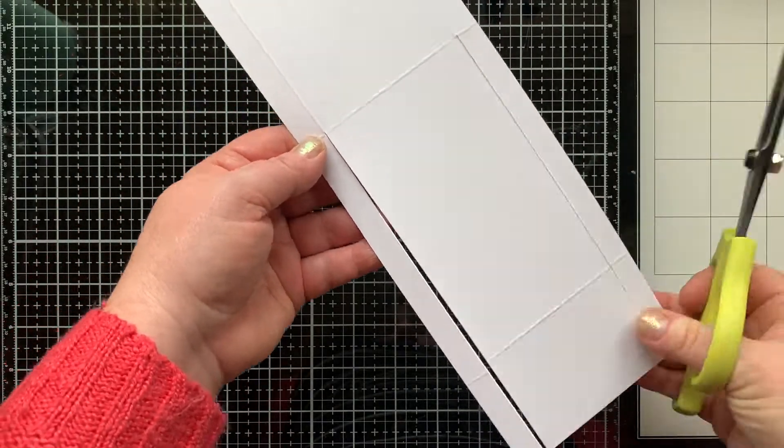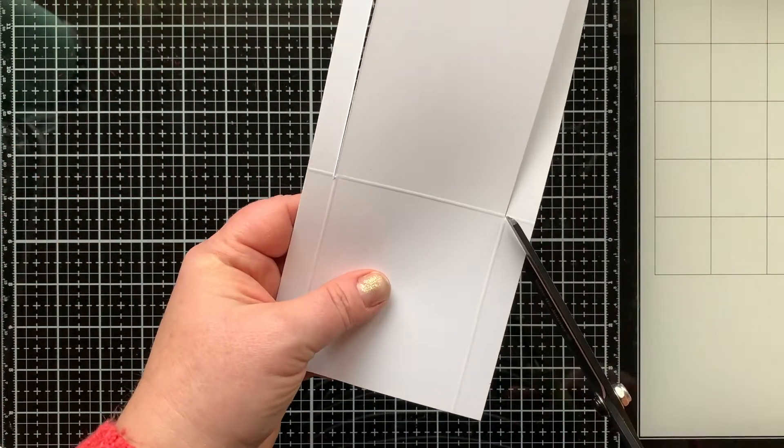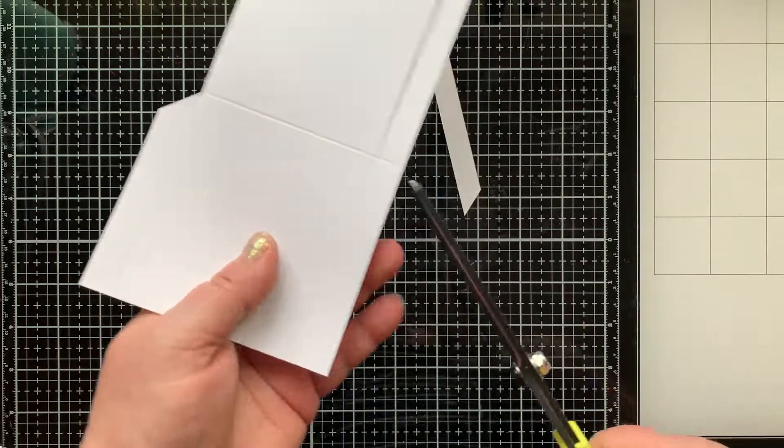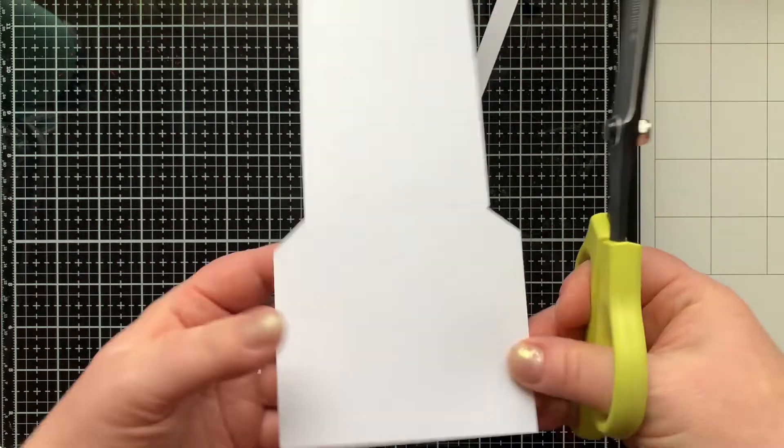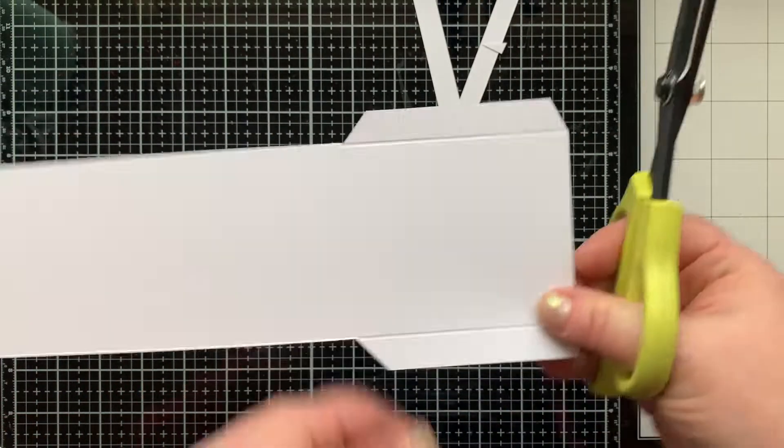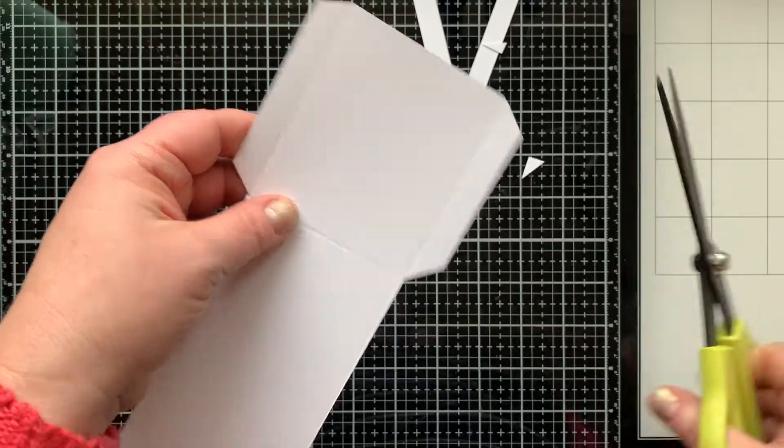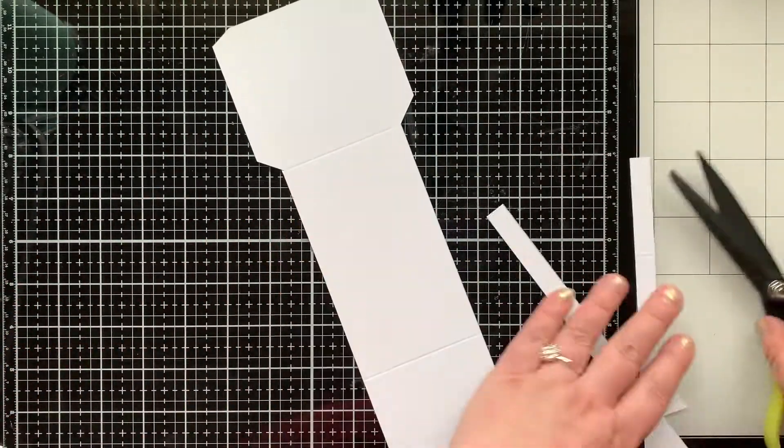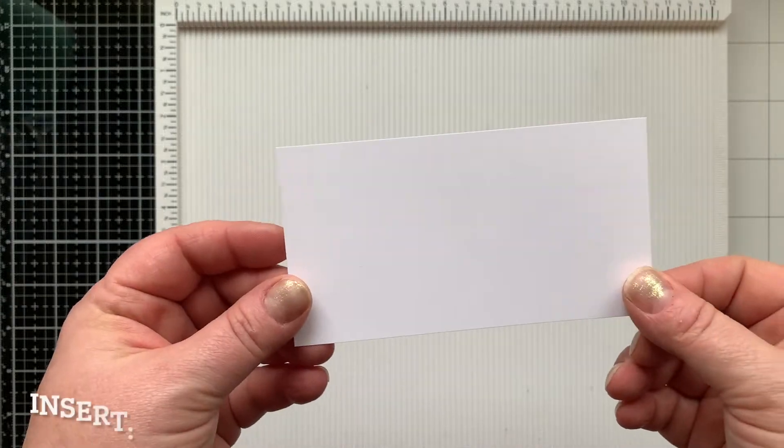I like to snip mine off at an angle because then I don't have to worry about the corner of these tabs getting in the way, and they will look just like that. And that's how we're going to adhere this pocket together.